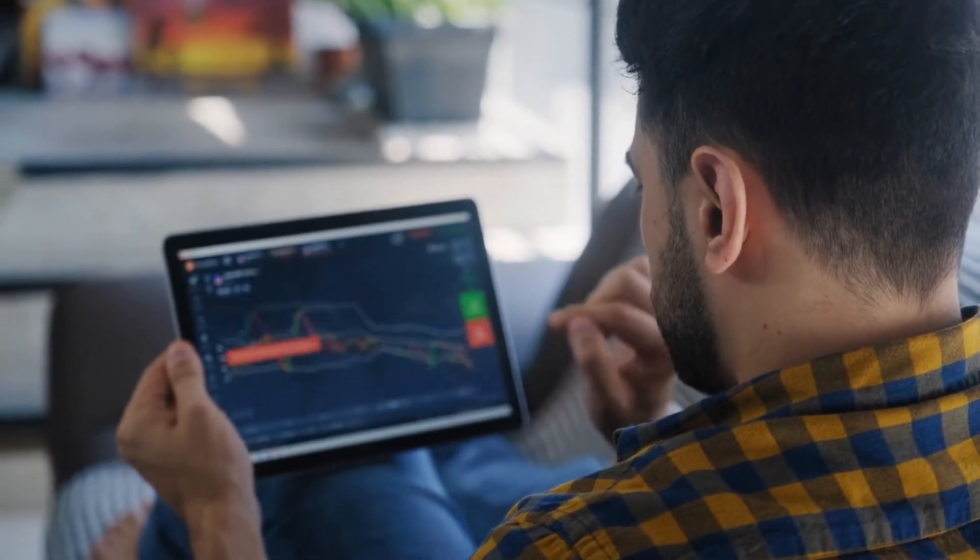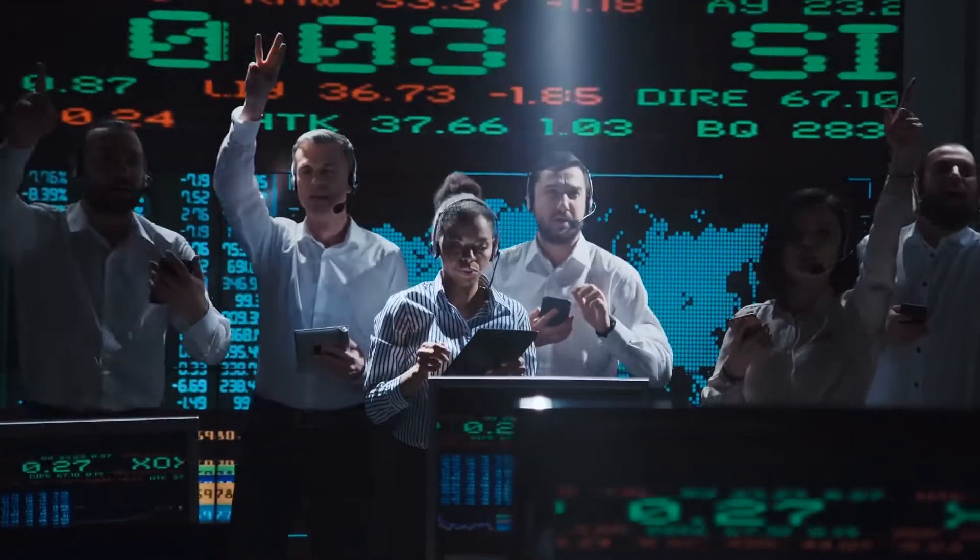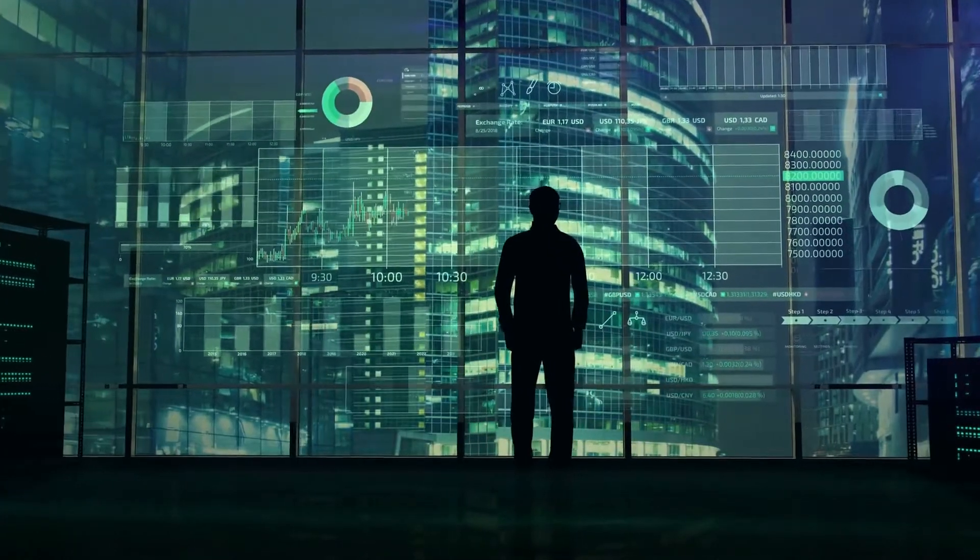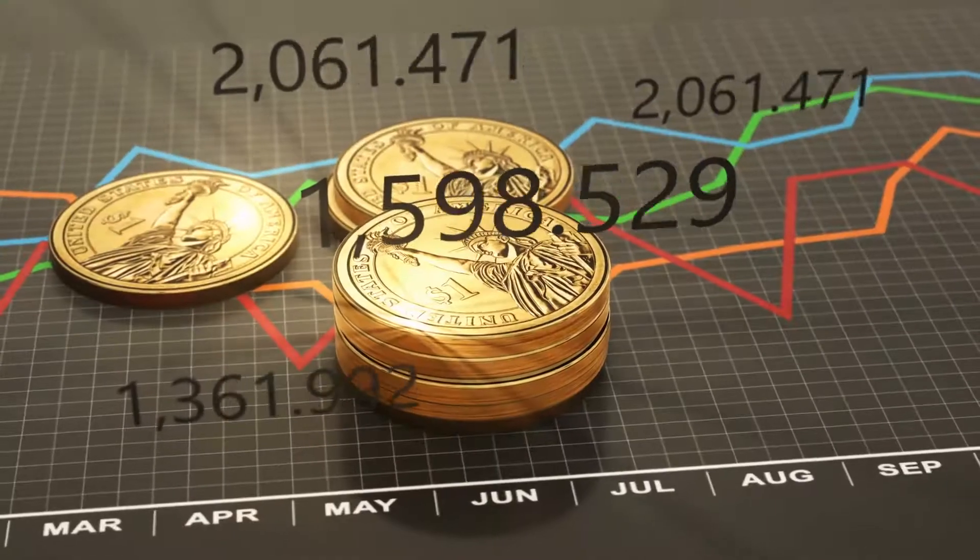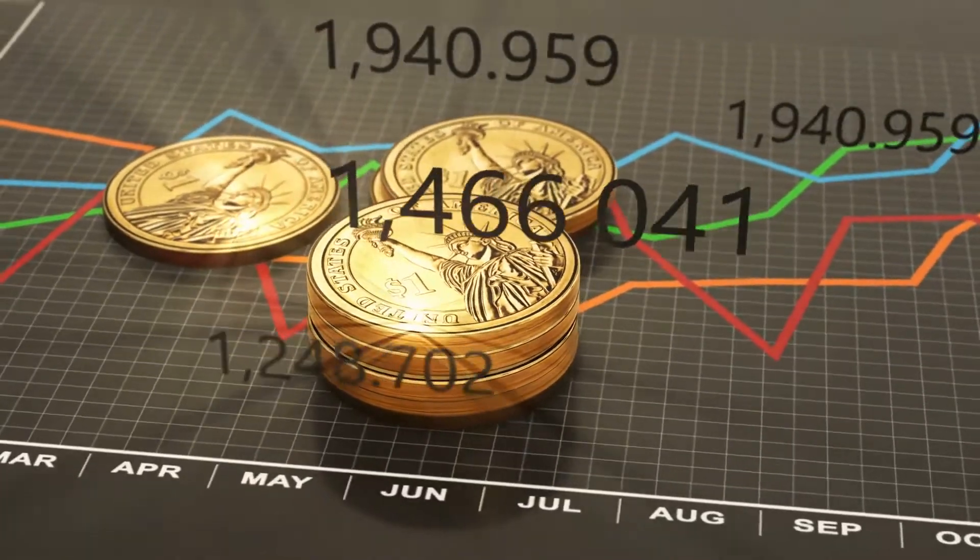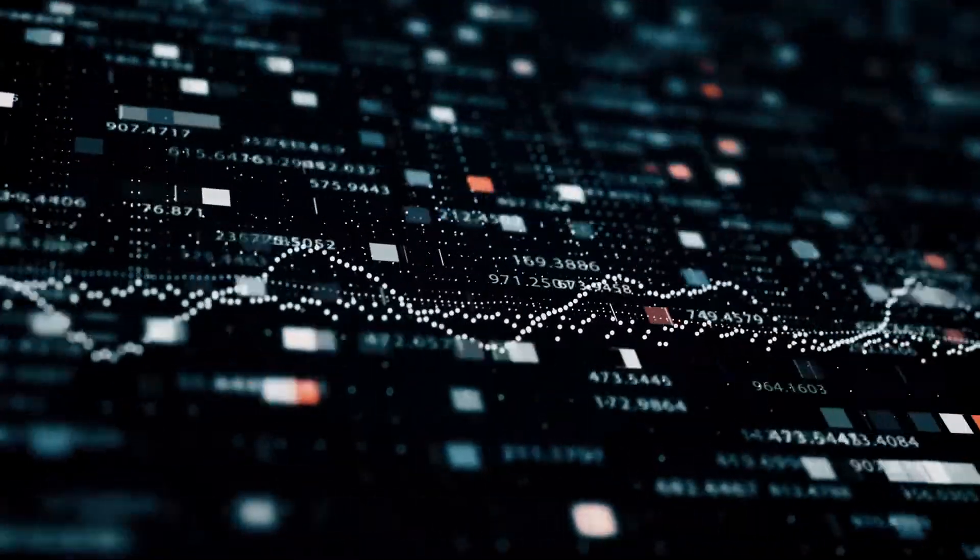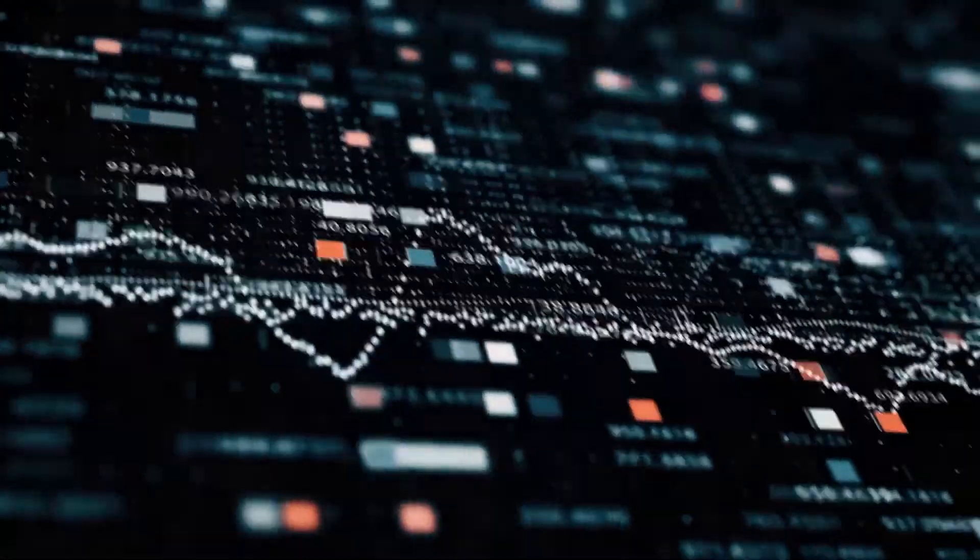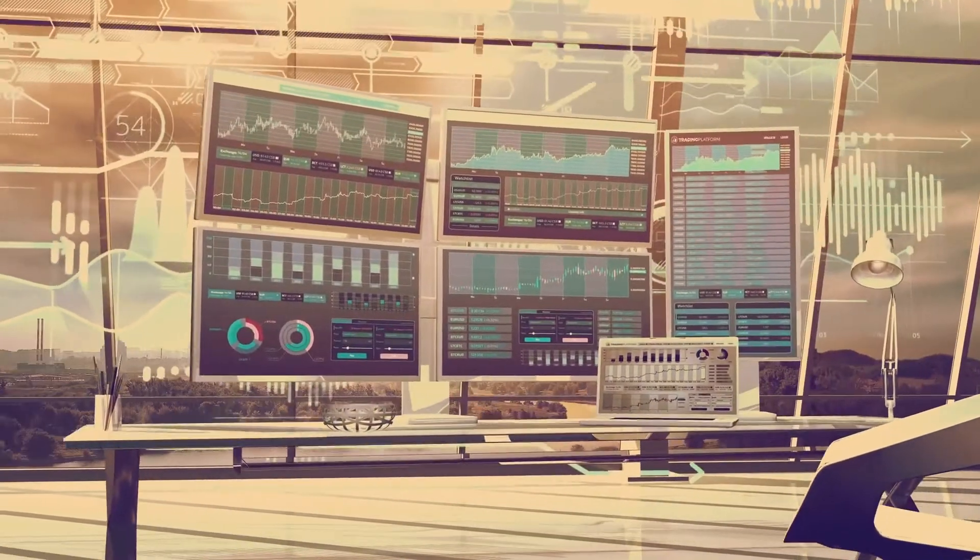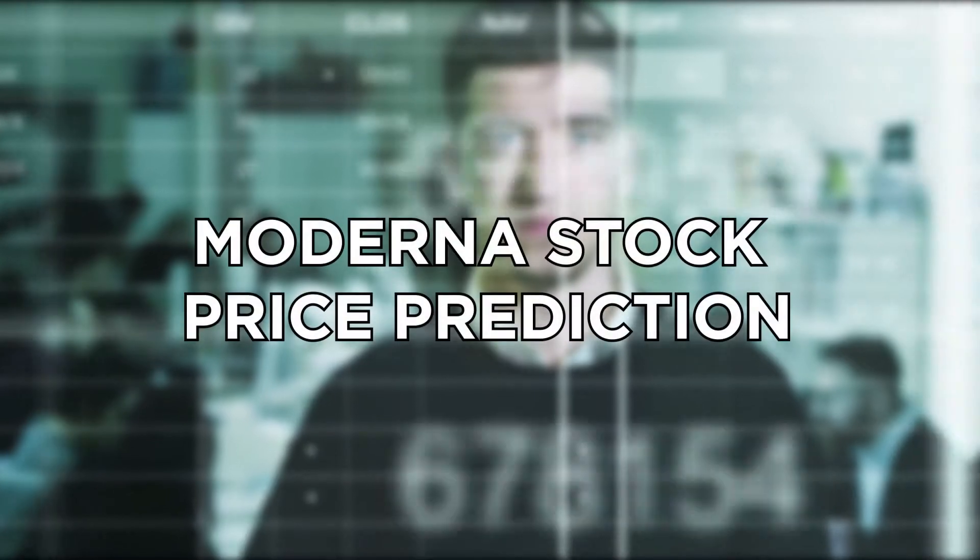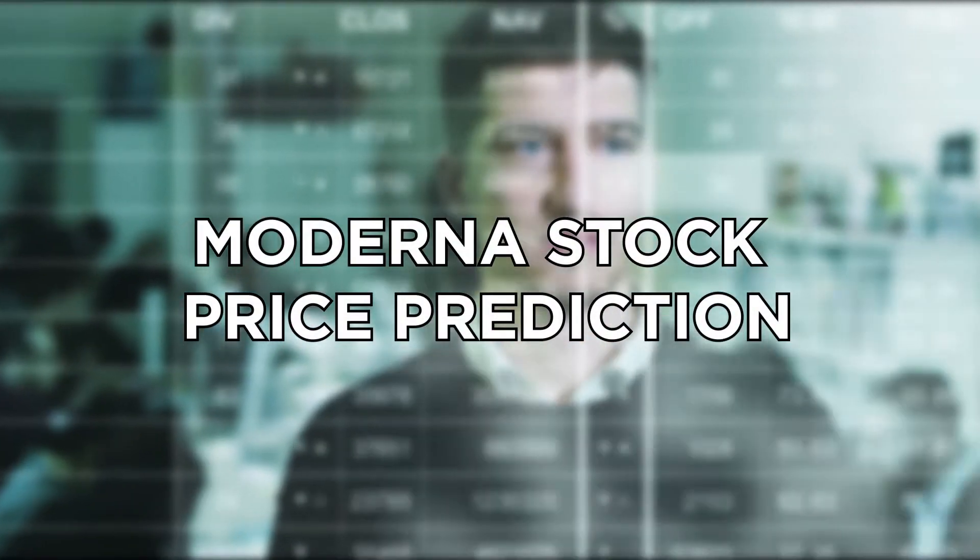The Moderna Inc. stock price gained 1.69% on the last trading day, Friday, February 5th, 2021, rising from $173.31 to $176.24 and has now gained 5 days in a row. It will be exciting to see whether it manages to continue gaining or not. Today, we will check out Moderna stock price prediction.